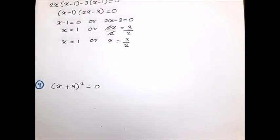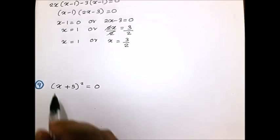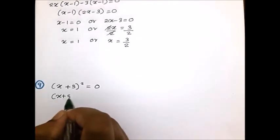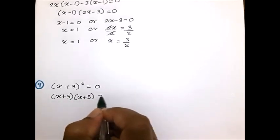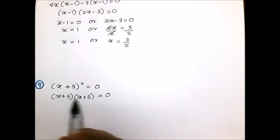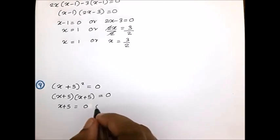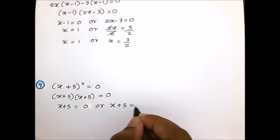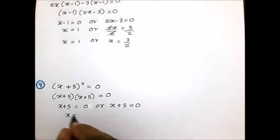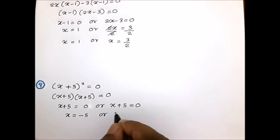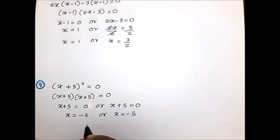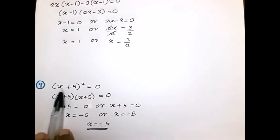Ninth example: (x + 5)² = 0. Expand this as (x + 5)(x + 5) = 0. Since multiplication of these two terms equals 0, we write x + 5 = 0 or x + 5 = 0 — both give the same answer. Taking +5 to the right gives x = -5. The solution is x = -5.